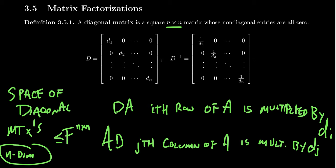Furthermore, if no diagonal entry is zero, a diagonal matrix will be a product of elementary matrices of the scaling type, and hence by the non-singular matrix theorem, it will be non-singular. Therefore its inverse is given by taking the reciprocals of each of the diagonal entries. A diagonal matrix is non-singular if and only if it has all non-zero entries along the diagonal.